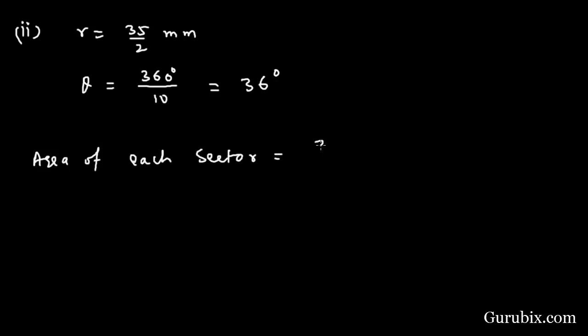...equals 36 over 360 degrees times 22 over 7, r is 35 over 2, so it will be multiplied 35 over 2 millimeter square. This equals 1 over 10, here we have 22 over 7, here we have 35 over 2, 35 over 2 millimeter square.